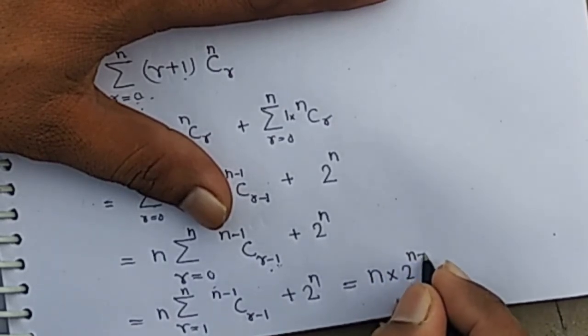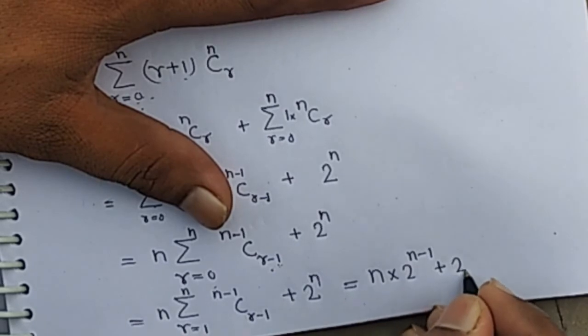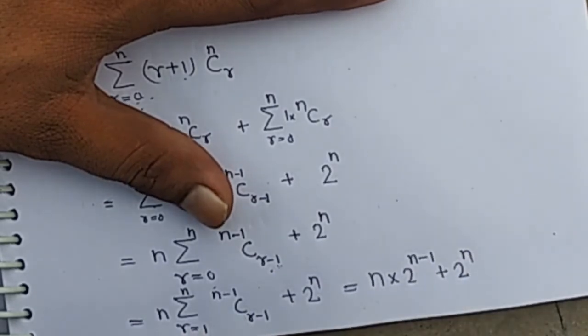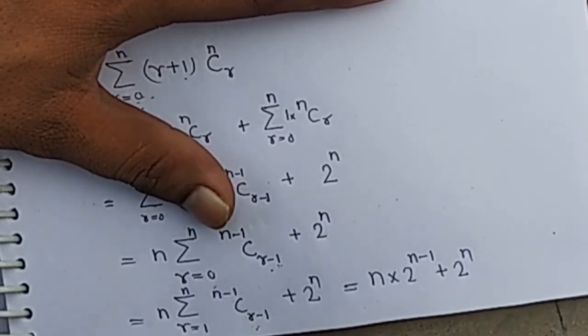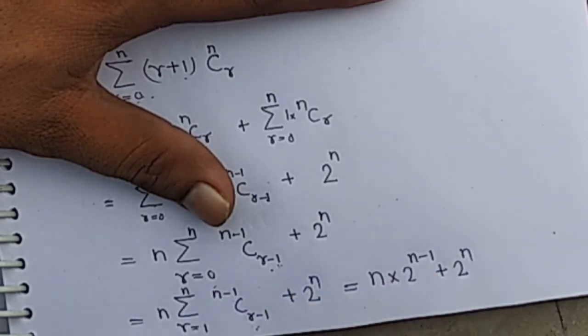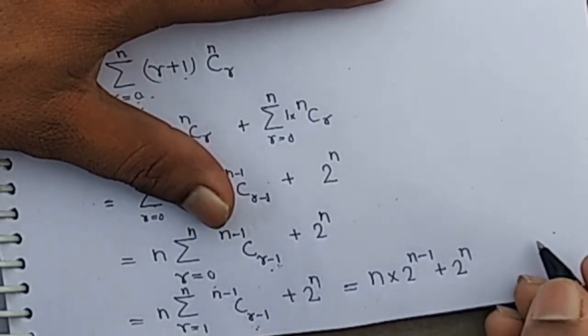And it is the formula for 2 to the power n minus 1. You can check it: r equals 1 gives (n-1)C0, r equals 2 gives (n-1)C1, r equals 3 gives (n-1)C2, and r equals n gives (n-1)C(n-1), then 2 to the power n minus 1.